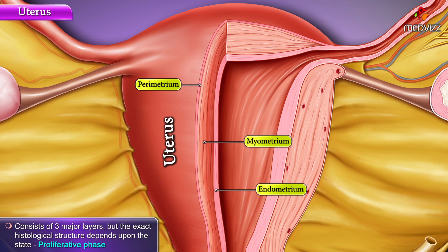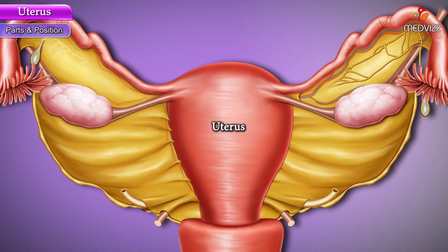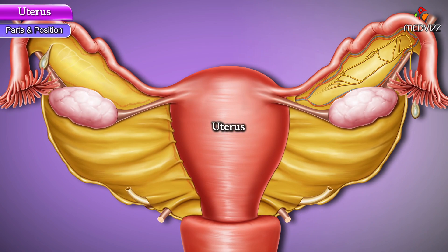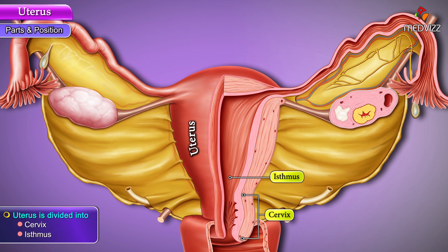It consists of three major layers, but the exact histological structure depends upon the state — whether it is in the secretory or the proliferative phase. As we've seen earlier, the uterus is divided into the cervix, isthmus, and the body, which is also called the corpus.